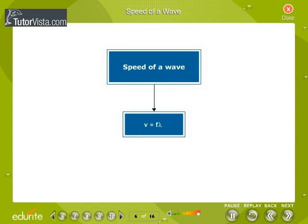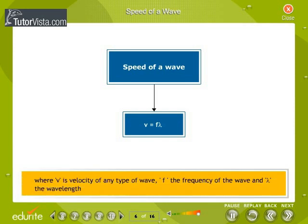Speed of a wave V is equal to F into lambda, where V is velocity of any type of wave, F the frequency of the wave and lambda the wavelength.